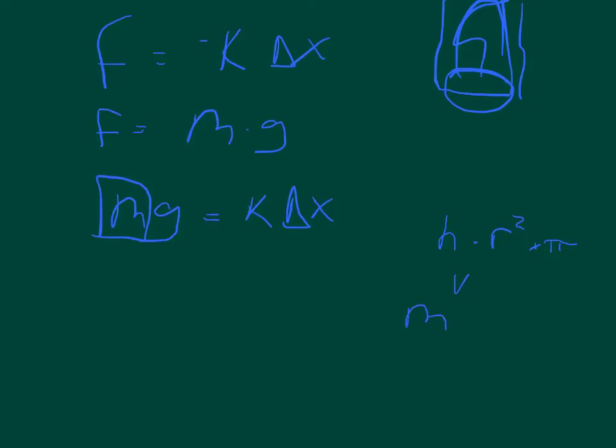And we can find out the mass, because mass divided by volume equals density, and so we can figure out the mass by multiplying the volume by the density. So we can say that mass equals density times volume. So we can replace that over here to say the density times the volume times gravity equals k times the change of x.